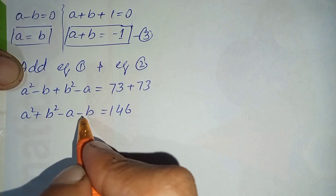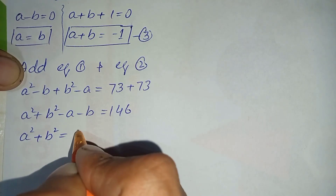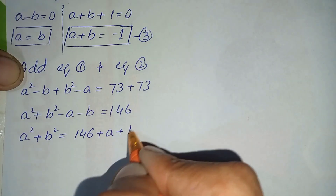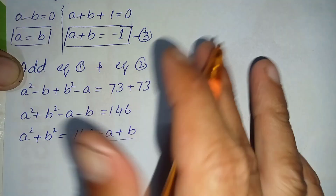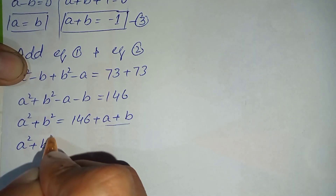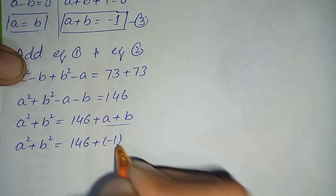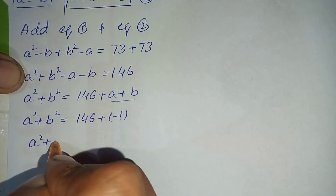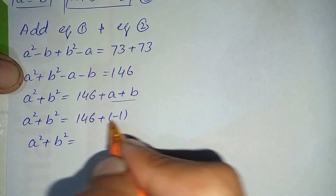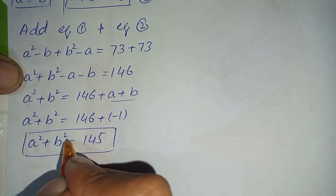We shift minus a and minus b to the right-hand side, making them positive: a squared plus b squared equals 146 plus a plus b. Substituting the value of a plus b from equation number three, which is minus 1, we get a squared plus b squared equals 146 minus 1, which is 145. We call this equation number four.